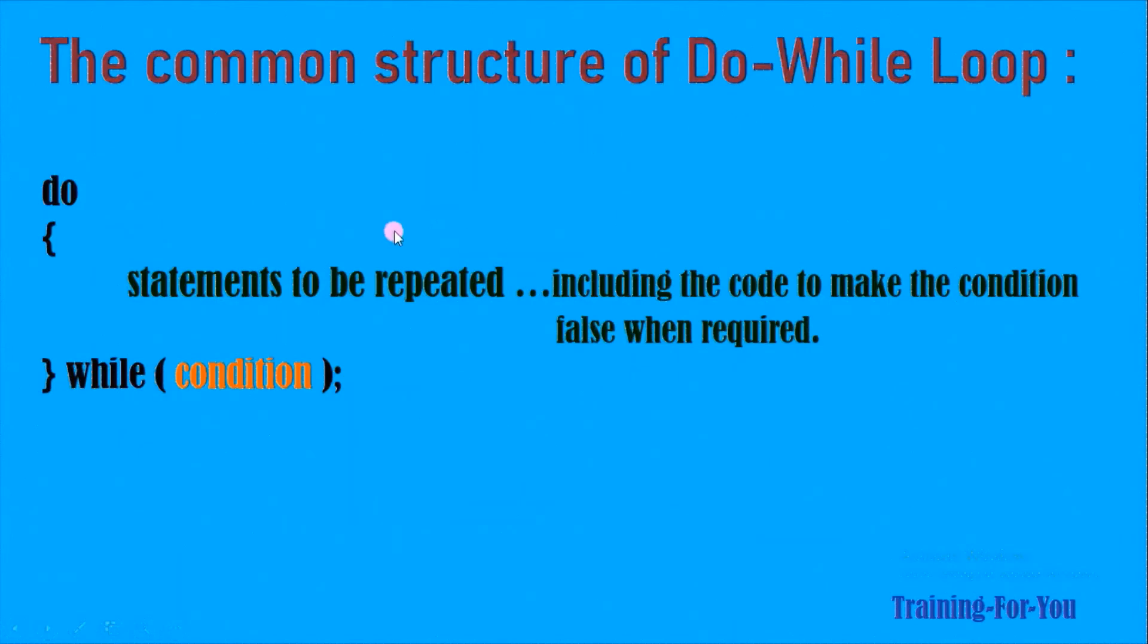The common structure is like this: do is followed by the loop body, and the body is followed by while followed by condition within parentheses and then semicolon.